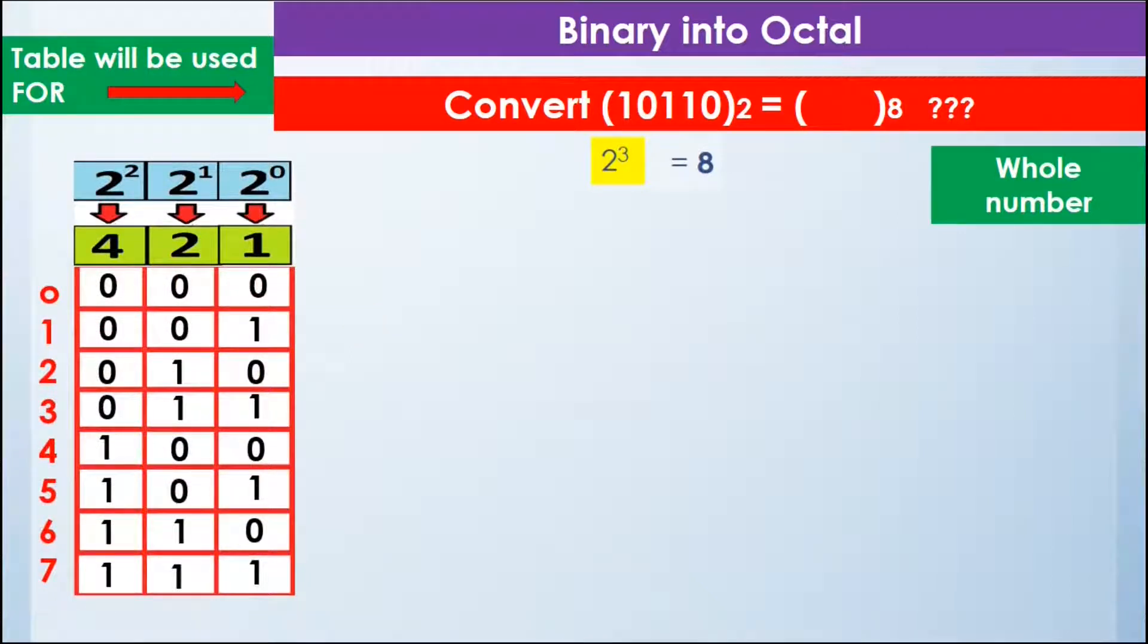This table shows octal numbers from 0 till 7 and their binary equivalents.